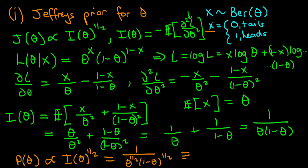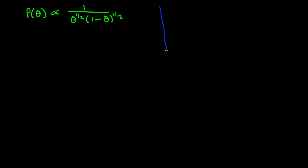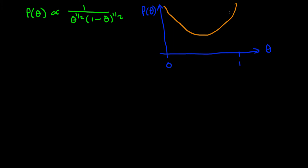This functional form is exactly the same as that of a Beta(1/2, 1/2) distribution. We can plot this density: theta, being a probability, is bounded between zero and one. The Jeffreys prior p(theta) bottoms out at theta equals a half and then asymptotes towards theta equals zero and theta equals one.